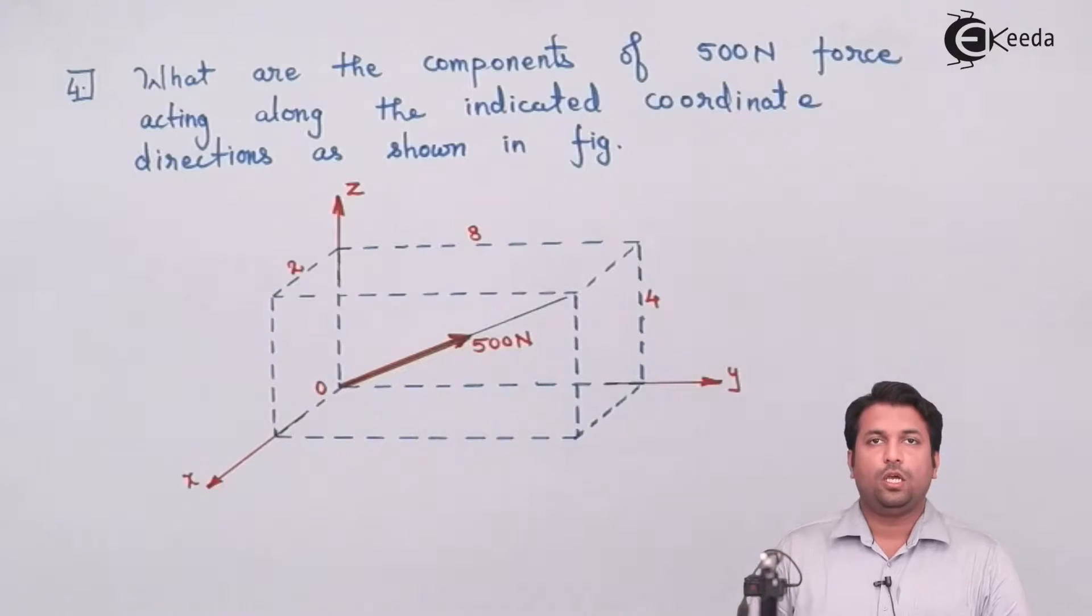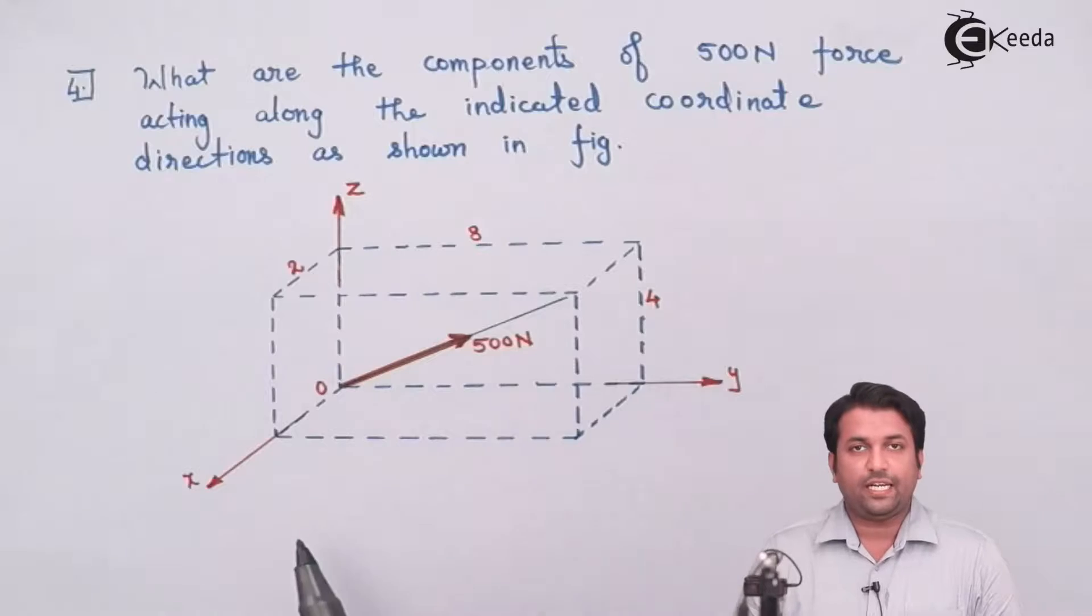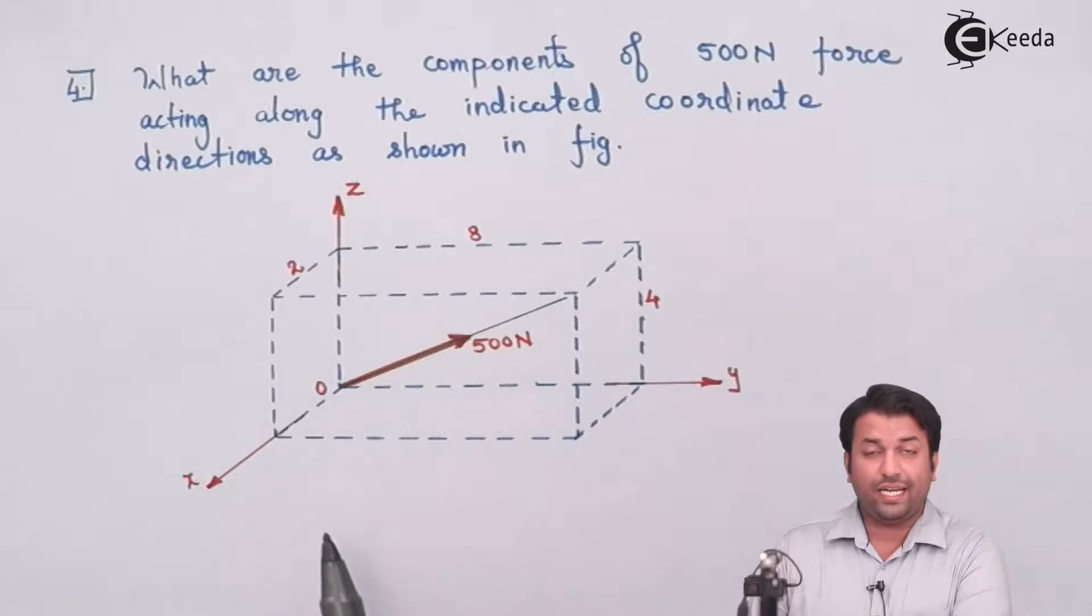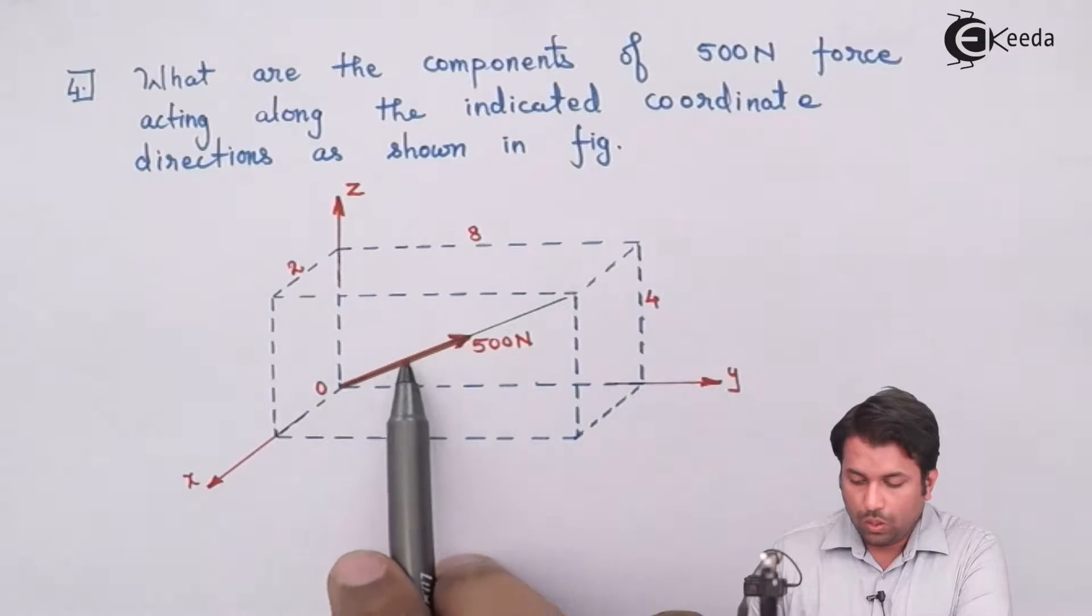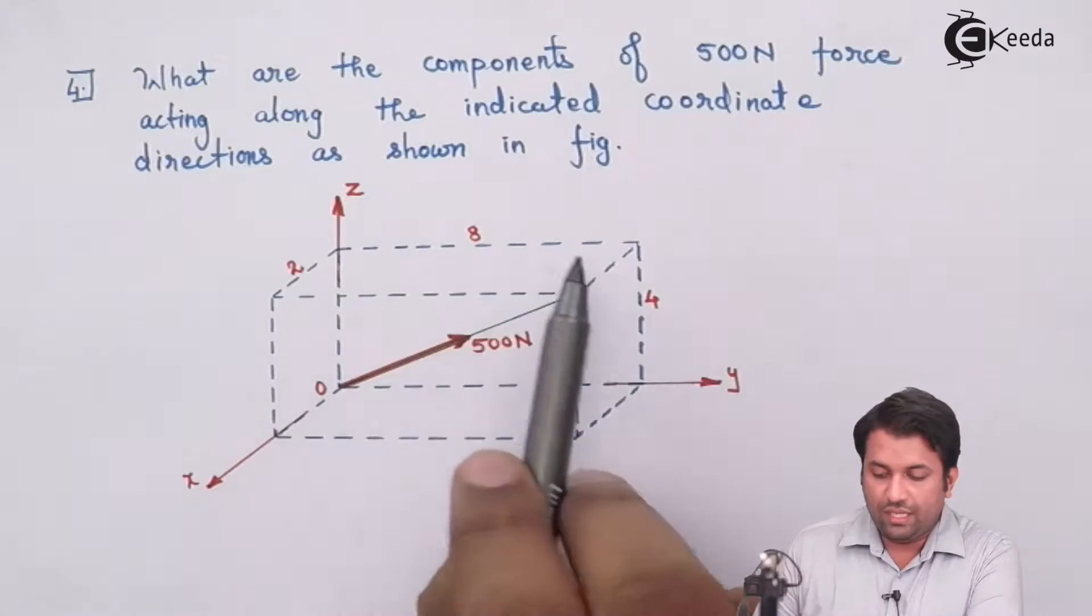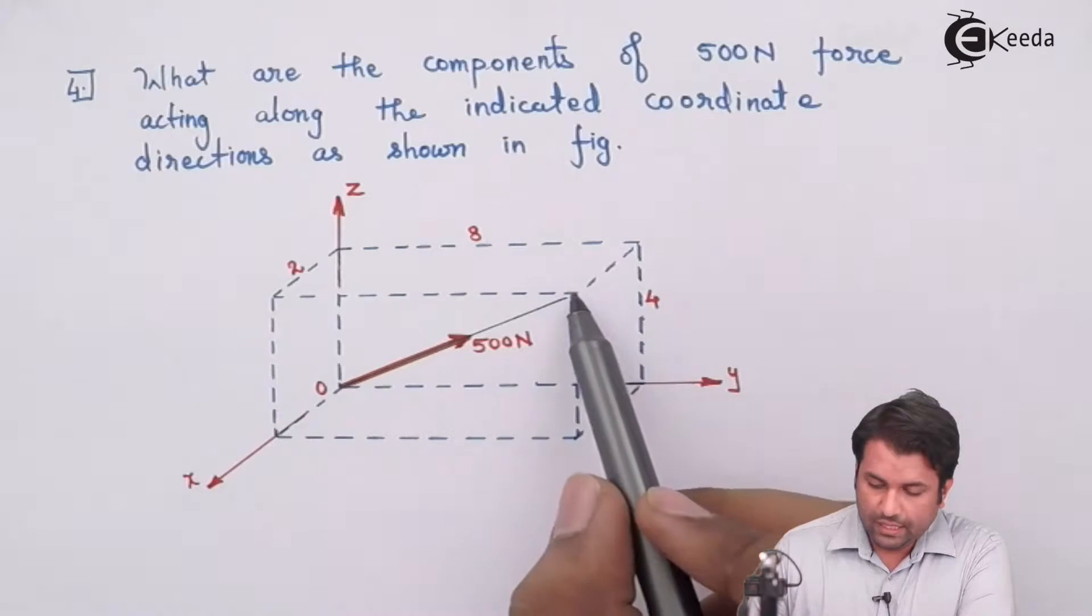Now in this example you can see that there is a force of magnitude 500 Newtons originating from the origin and going through the body diagonal of this box over here from this point.